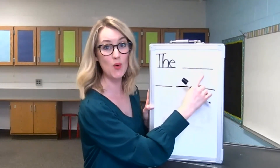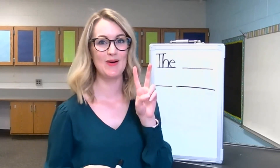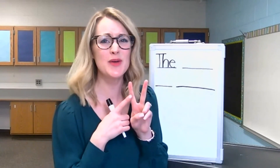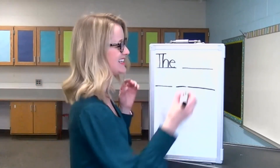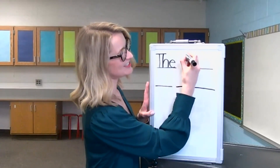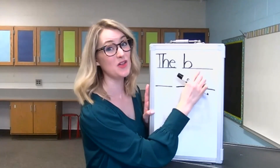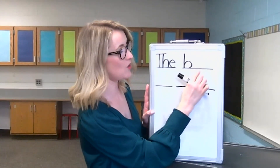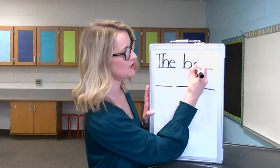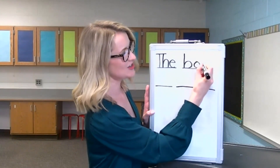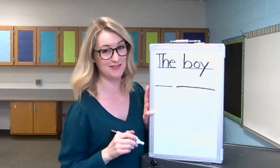Let's read our first word. 'The' — boy comes next. Let's stretch out the sounds in the word 'boy': B-oy. What sound do you hear at the beginning of that word? That's right, a B. Let's make a B: start at the top, go down, back up, then around. Now this is tricky — in this word, the 'oi' sound is spelled O-Y. Let's write it: start in the middle, around for the O. Then start in the middle, slant down, back up, then all the way down for the Y.